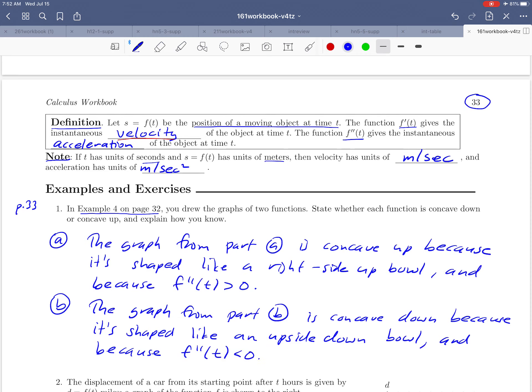Okay and maybe I want to make just one little correction in wording here. When I say shaped like a right side up bowl that might make you think that the entire graph looks like an entire bowl. It might be more accurate to say like part of a bowl. Okay so I'm just going to insert those words here.